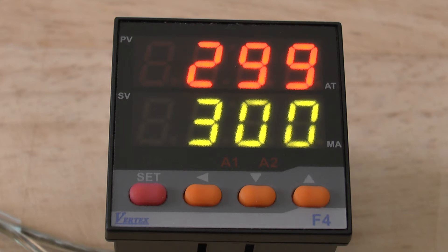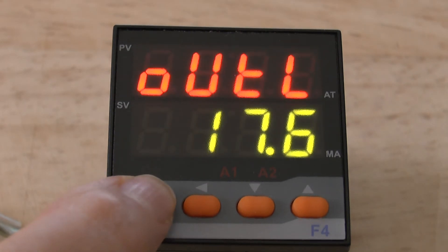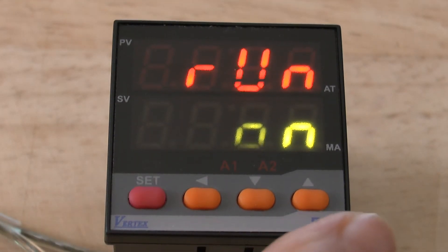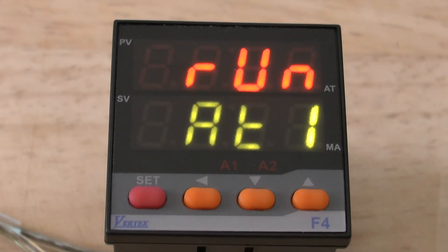In order to do the auto-tune, you push the SET button a number of times until you reach the RUN parameter, and then you use the UP button and change it to AT1.